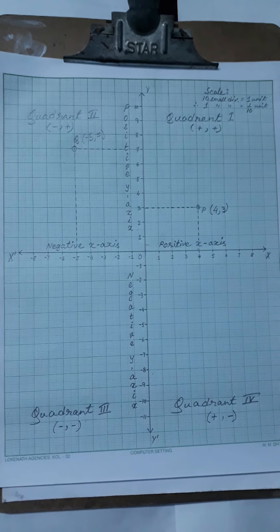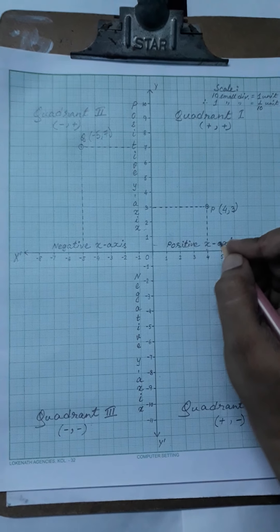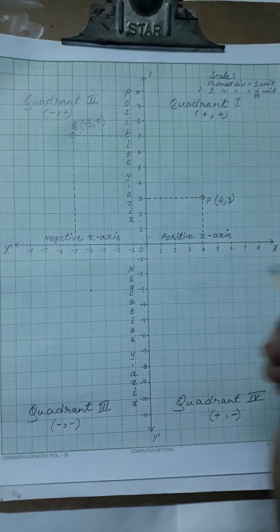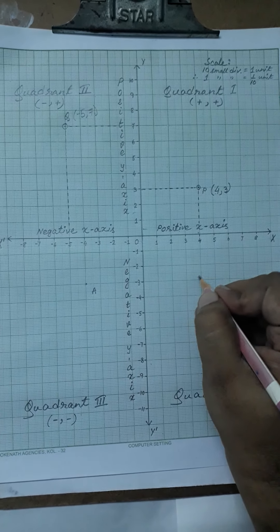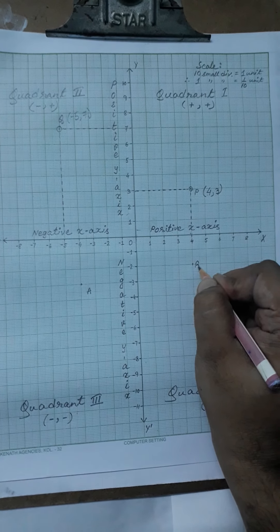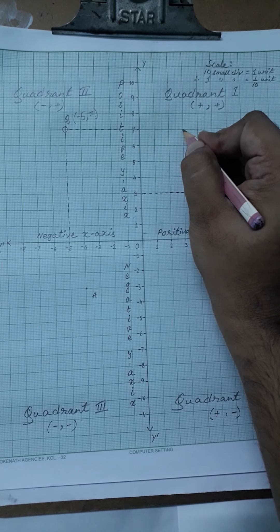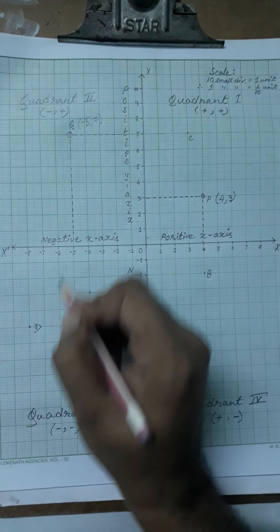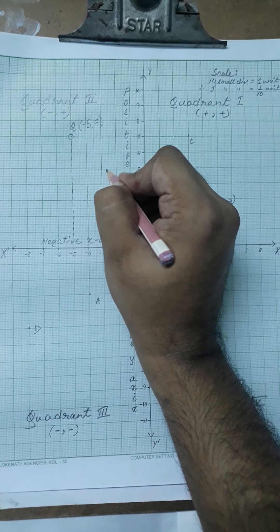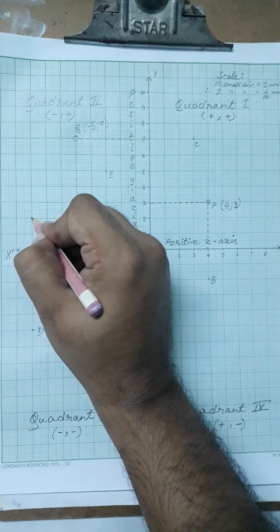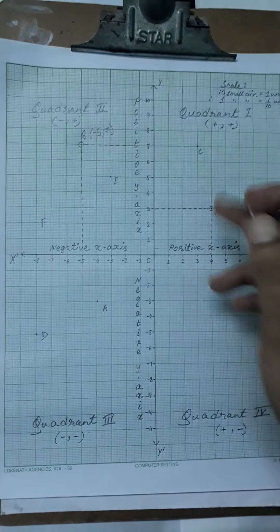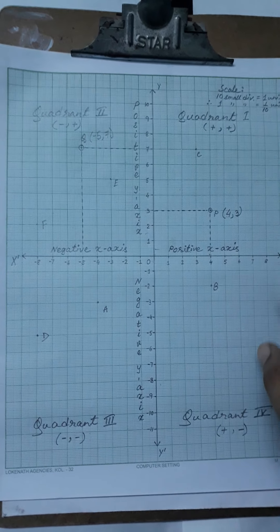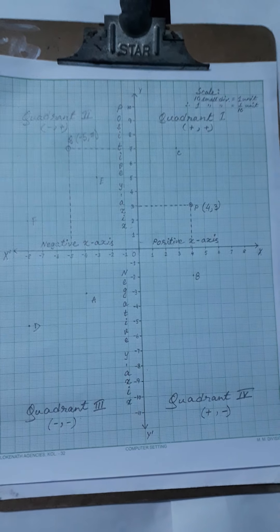A few things to remember while doing graph work: write the scale, give arrows on the axes, name the axes, and write the reading of the axes. This is a brief introduction to coordinate geometry. Write this in your graph copy. In the next video we will see a few more things. Before that, I am giving you a task — I am mentioning six points A, B, C, D, E, F on the graph and you will write down their coordinates in your copy. See you in the next video, till then Namaste.